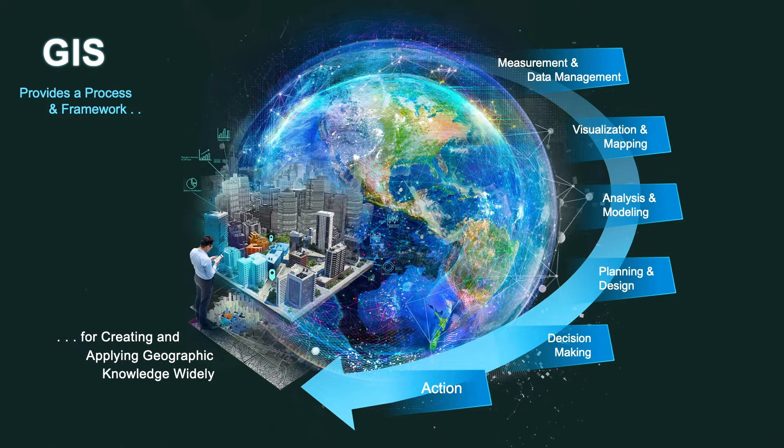Geographic science is the science of our world. And the big idea here is to bring that science into the operational functions and management of organizations. It provides a framework and a process from measuring data and managing it, to visualizing it in the form of maps or 3D visualizations and dashboards, to more serious work in the form of analytics, modeling, and predicting. Looking at planning and design is another major step in virtually all of your activities.